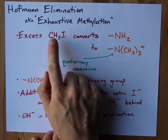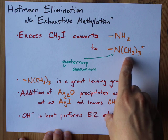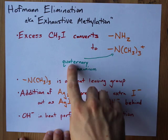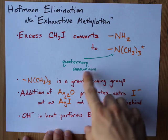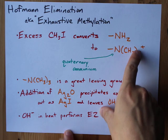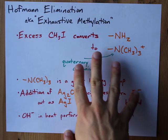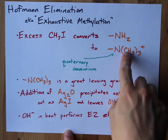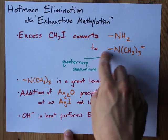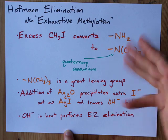Adding excess methyl iodide to that will convert it to N(CH3)3. Now that's called a quaternary ammonium, ammonium because it is a nitrogen with a formal charge of plus 1, and quaternary because it's attached to 4 other carbons, 3 from methyl groups and 1 from whatever the carbon chain that it was originally attached to was.